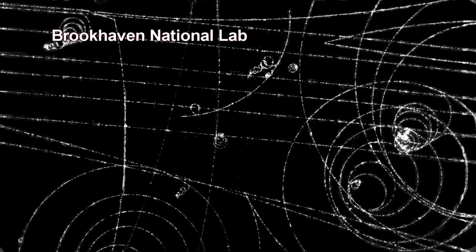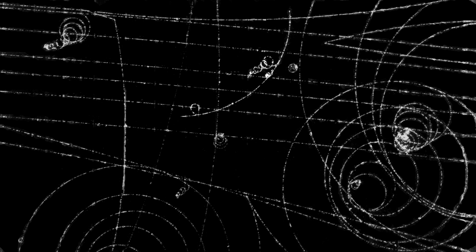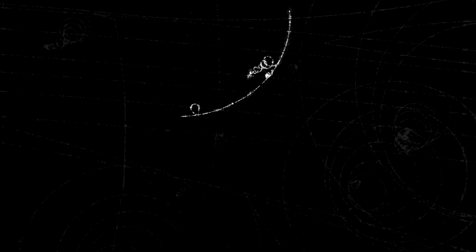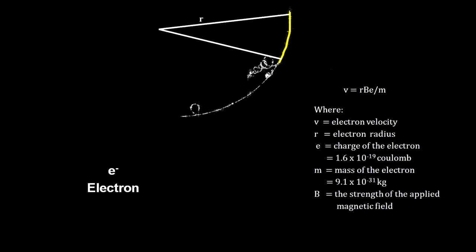Here is a photograph of a particle track in a hydrogen bubble chamber from the Brookhaven National Lab. This is a medium-speed electron arching through the cloud chamber. Since we know the strength of the magnetic field applied across the bubble chamber, we can calculate the particle's momentum by measuring the radius of its curvature. The straighter the path, the faster the particle is moving.